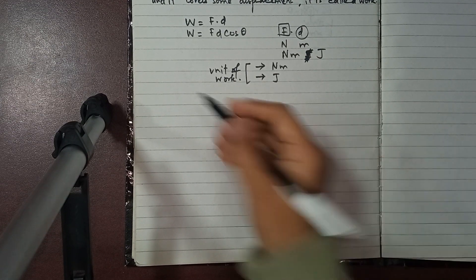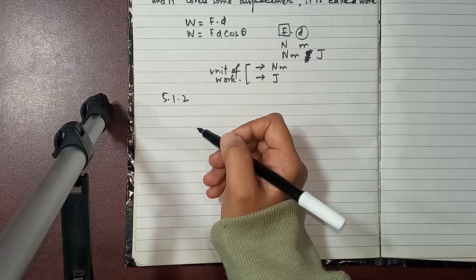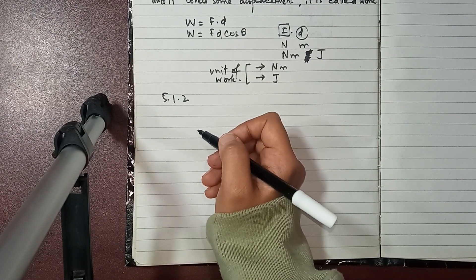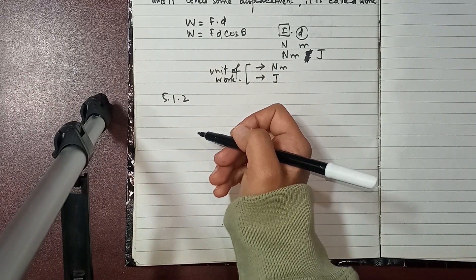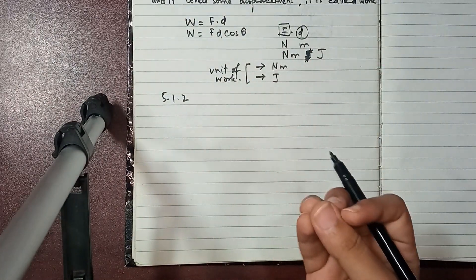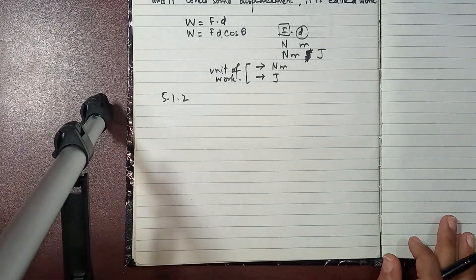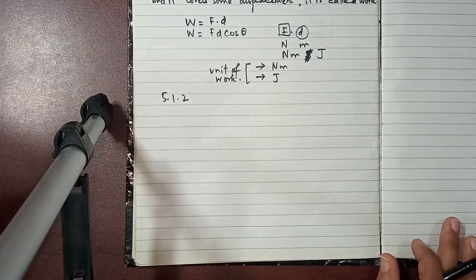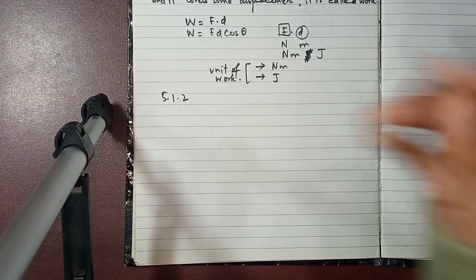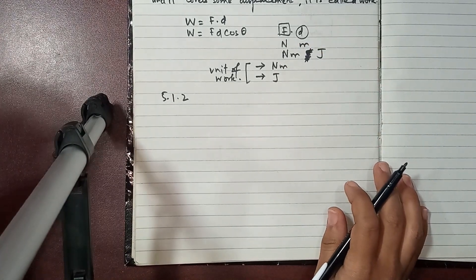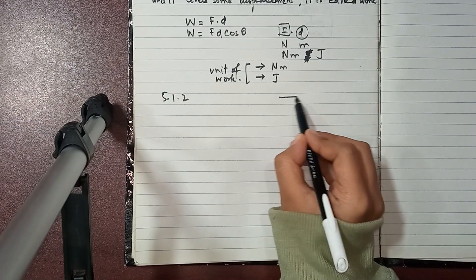Now topic 5.1.2 — there are different cases of work done by a constant force. First, what is a constant force versus a variable force? A constant force is one whose magnitude and direction never change — both remain the same throughout.